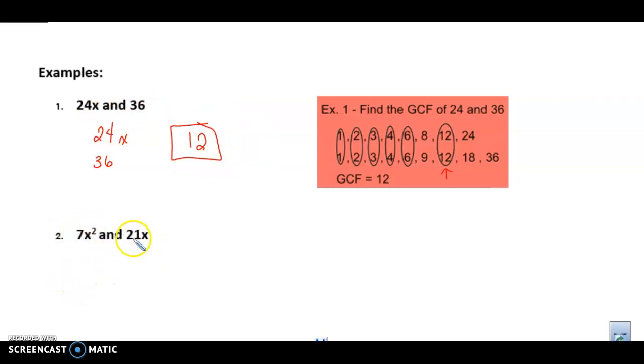If I'm looking at this one, I have 7x squared and 21x. I know 7 will go into 21, so 7 is going to be my greatest common factor. And I have two x's here and one x here, so I know that they share an x. So that's my greatest common factor of these two terms.